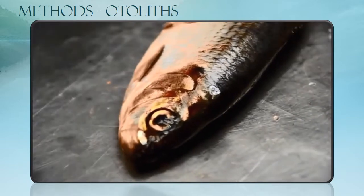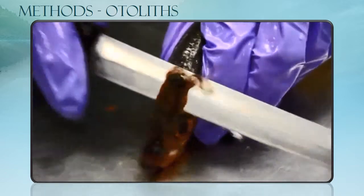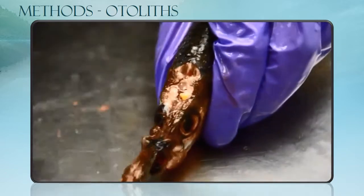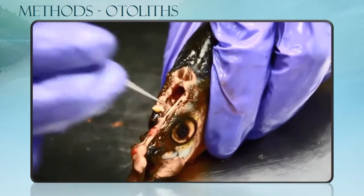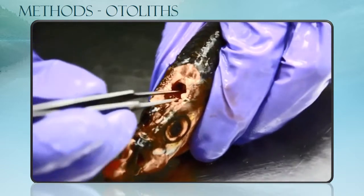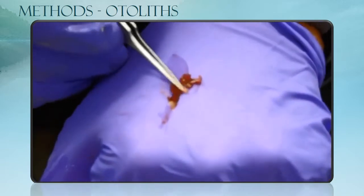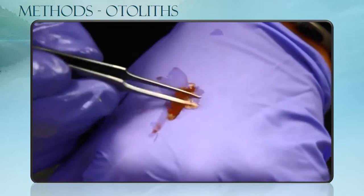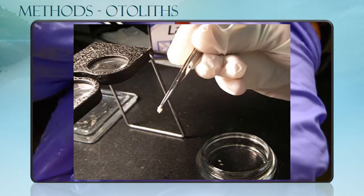Otolith extraction is more complicated and requires sacrifice of the fish. Using a scalpel or knife, the top part of the head is excised from the back of the skull, slicing forward through a point just above the eyes, exposing the brain cavity. Using forceps, the brain matter is removed with a forward scooping motion. The otic membranes, one on each side, are extracted with fine-tipped forceps. The otoliths are usually found within this otic membrane, but occasionally remain in the bony case and can be dislodged with a squirt of water. Otoliths are rinsed and stored dry in labeled microcentrifuge tubes.